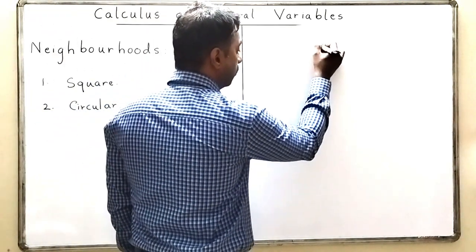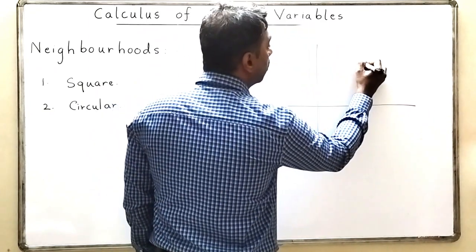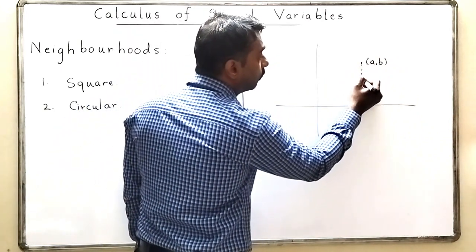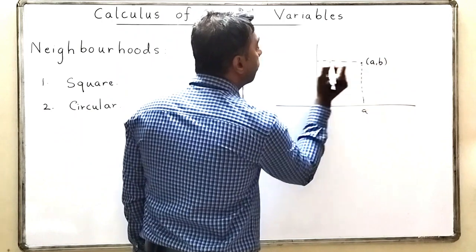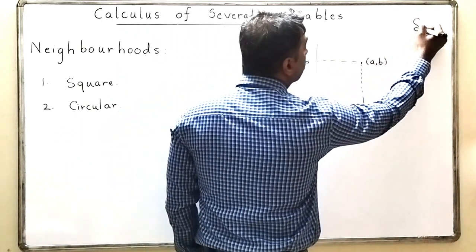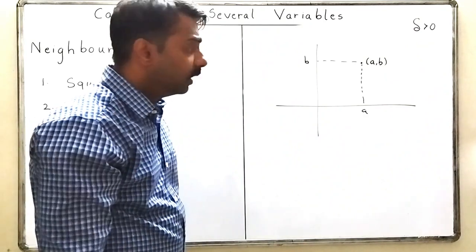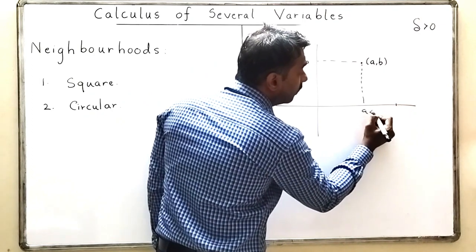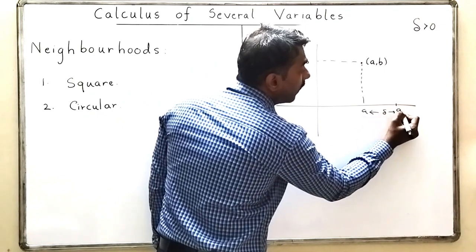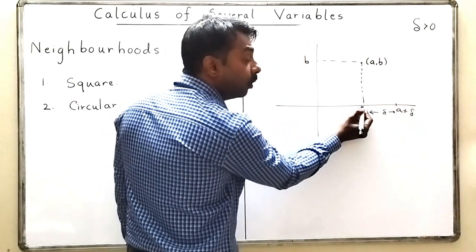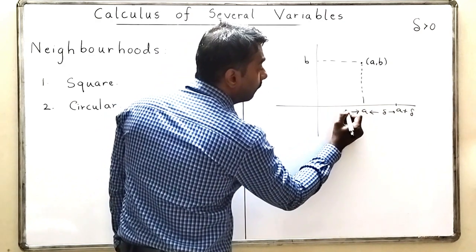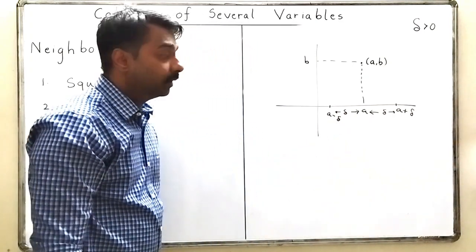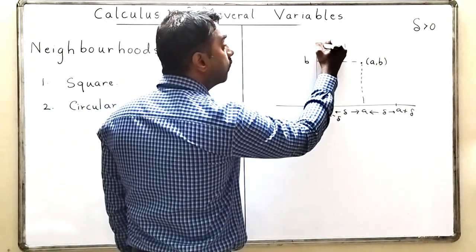Let us see what is a square neighborhood from this picture. I will take a point (a, b) in R2. This is a and this is b. Now take a small positive number delta. I will go delta distance ahead of a, so that point will be a plus delta, and if I go delta distance behind point a, then this point will become a minus delta.